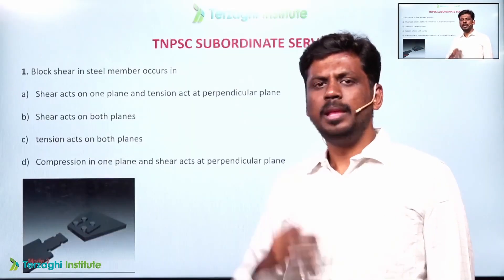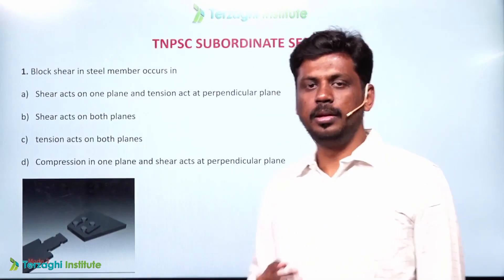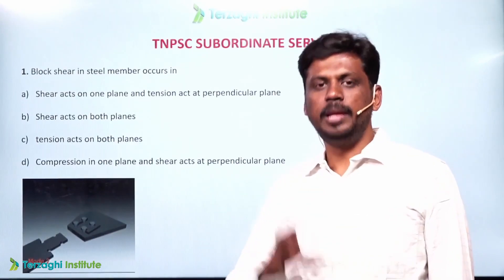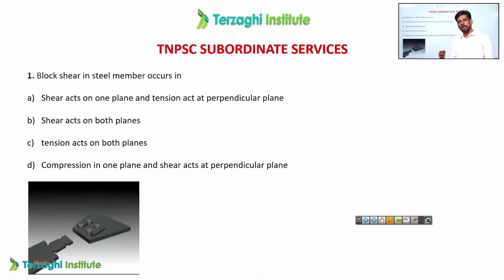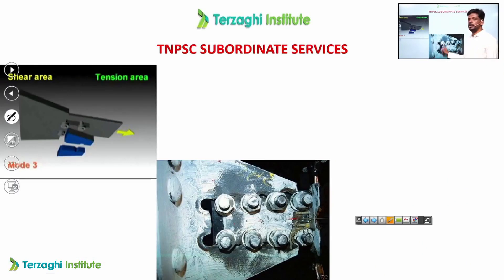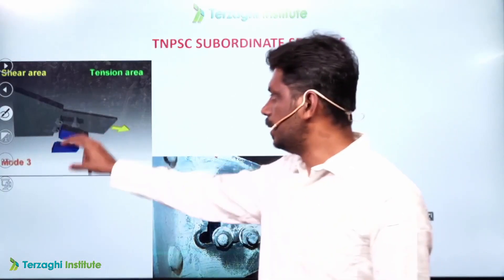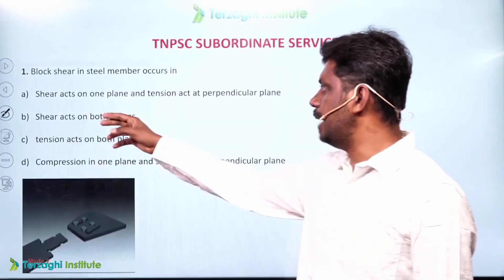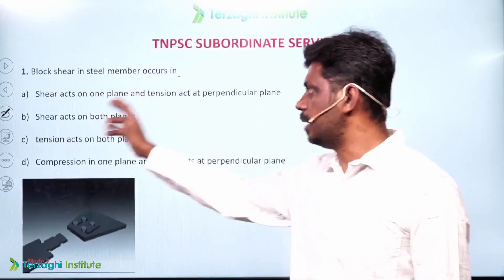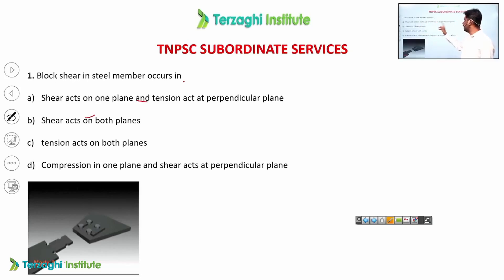Block shear involves many modes of failure — a shear plane and a tension plane. Along the load direction is the shear plane; across the load is the tension plane. You can see this in the image. Block shear failure occurs in a plate where shear acts on one plane and tension acts on a perpendicular plane.